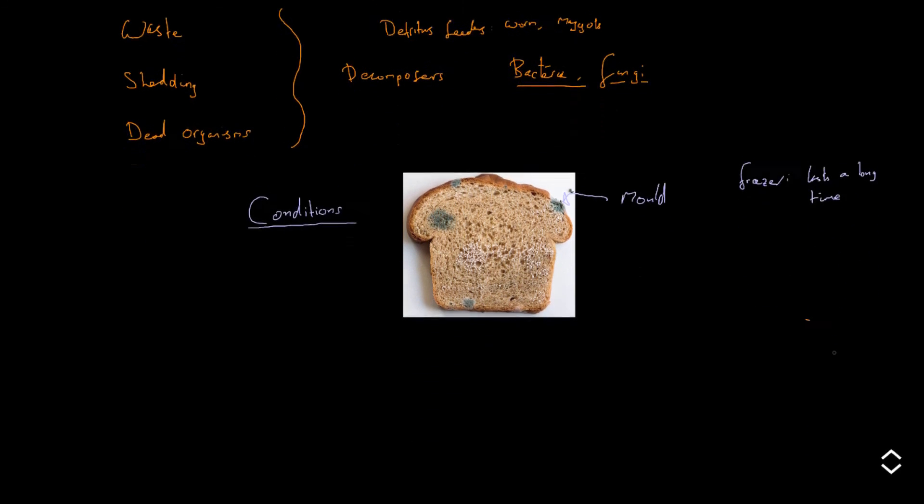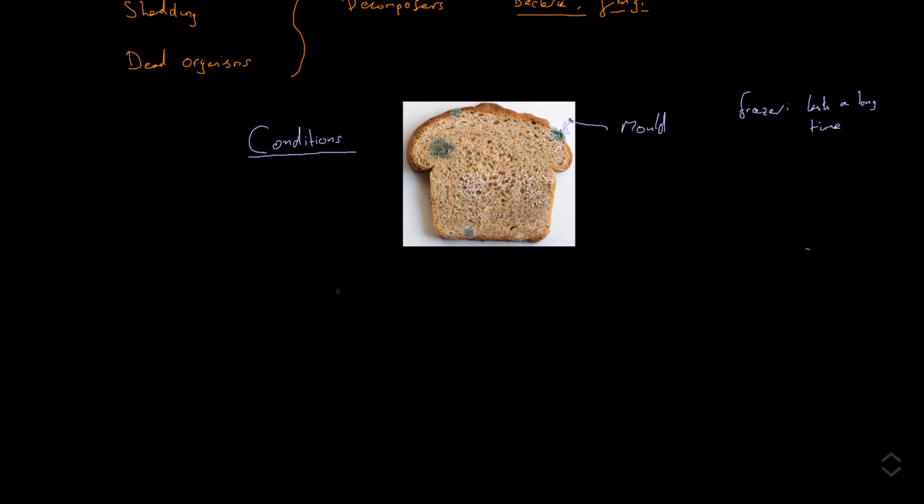And so those conditions are: first of all it needs to be warm. In our cupboard it's about room temperature and that's perfectly fine for mold to start growing or for other decay organisms to start growing and doing their thing. If we stored bread at 37 degrees Celsius it would go off even quicker because this is an even better temperature. But in the warm, this will occur.